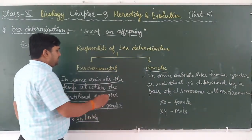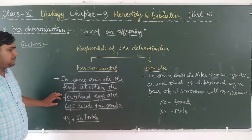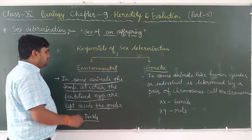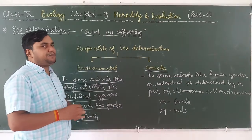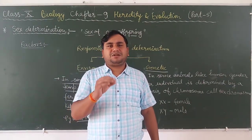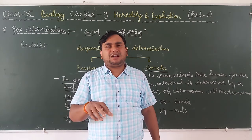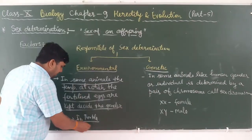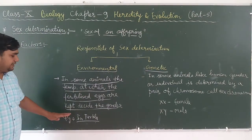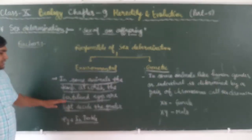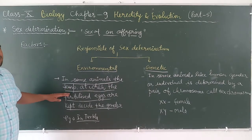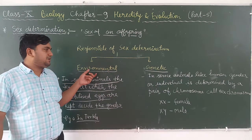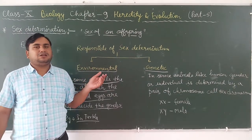On the basis of environmental factor, in some animals the temperature at which the fertilized eggs are kept decides the gender of that particular animal. For example, in the turtle, the gender is decided depending upon the temperature at which the fertilized eggs are kept. So the first factor is the environmental factor.